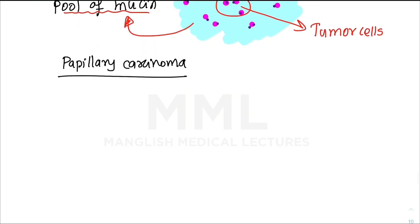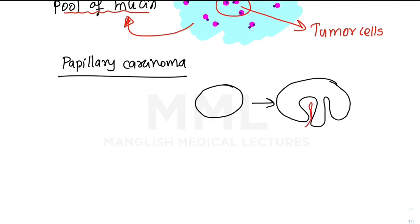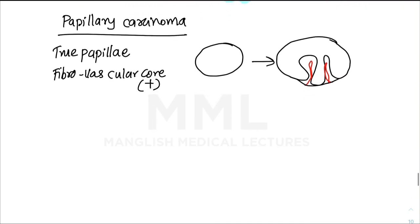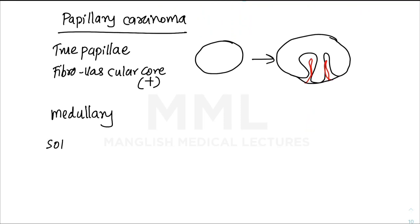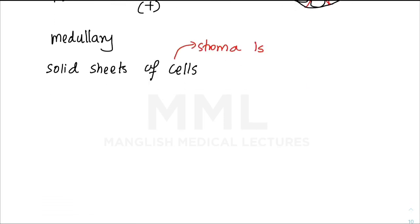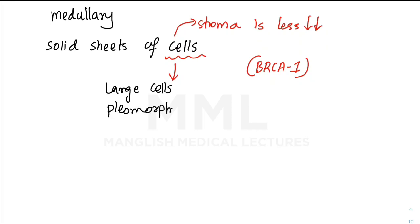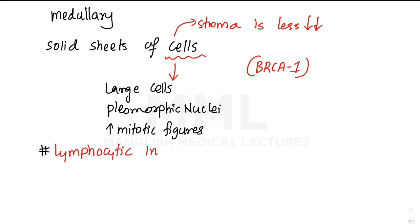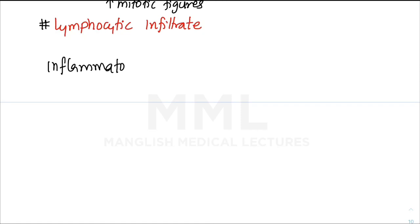Papillary carcinoma features finger-like projections (papillae) with true fibrovascular cores. Medullary carcinoma consists of solid sheets of cells with very little stroma. Cells are very large with pleomorphic nuclei and increased mitotic figures. An important distinguishing feature of medullary carcinoma is lymphocytic infiltrate. Recall that BRCA1 mutation is associated with medullary-type cancer.